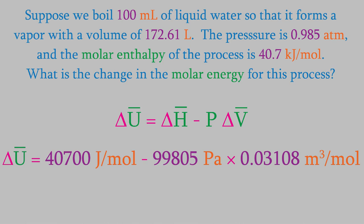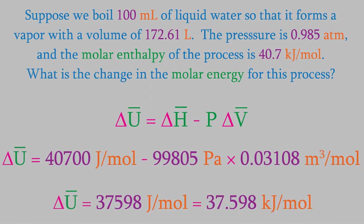When we plug that into our equation, we get a result of 37,598 joules per mole, or 37.598 kilojoules per mole, for the change in energy. Notice that this is a positive number, which means that the system absorbed energy. That makes sense, because it certainly requires energy in order to cause water to boil.